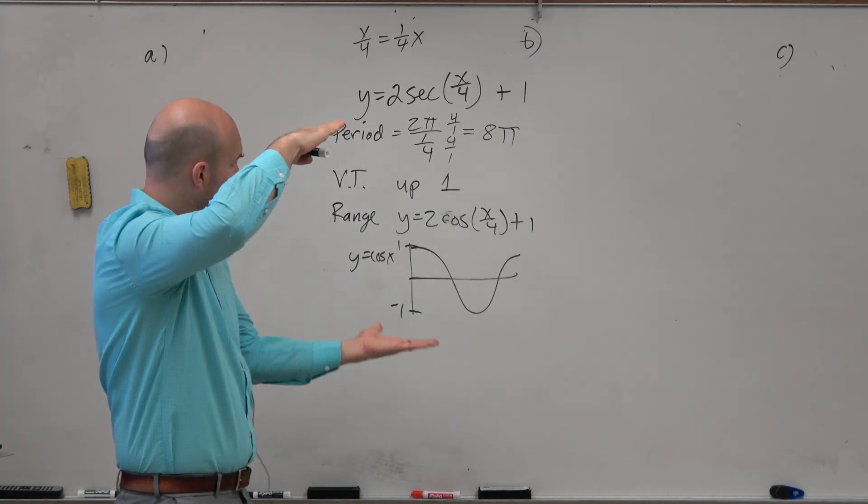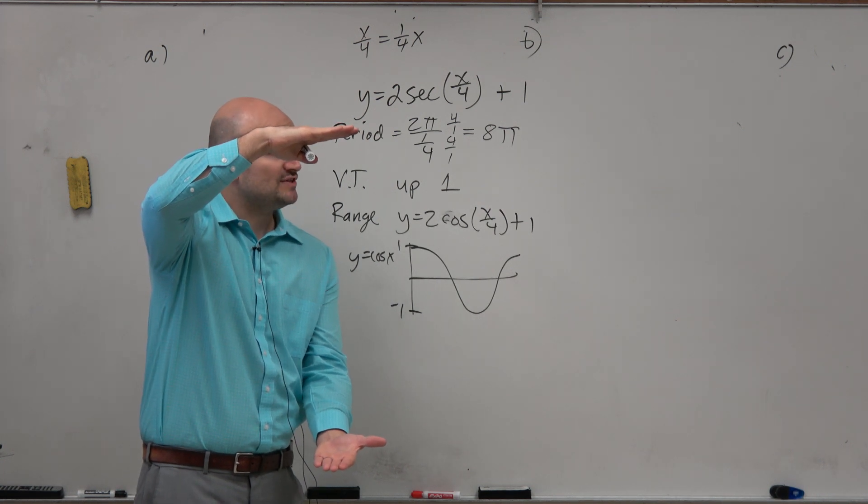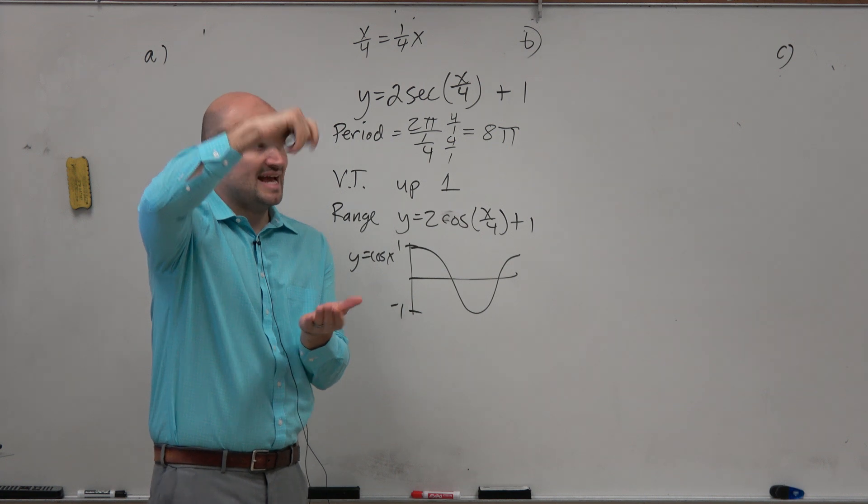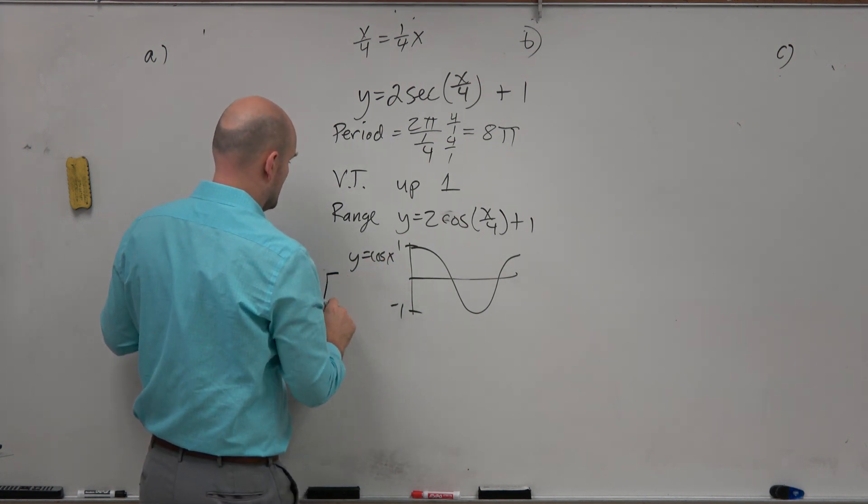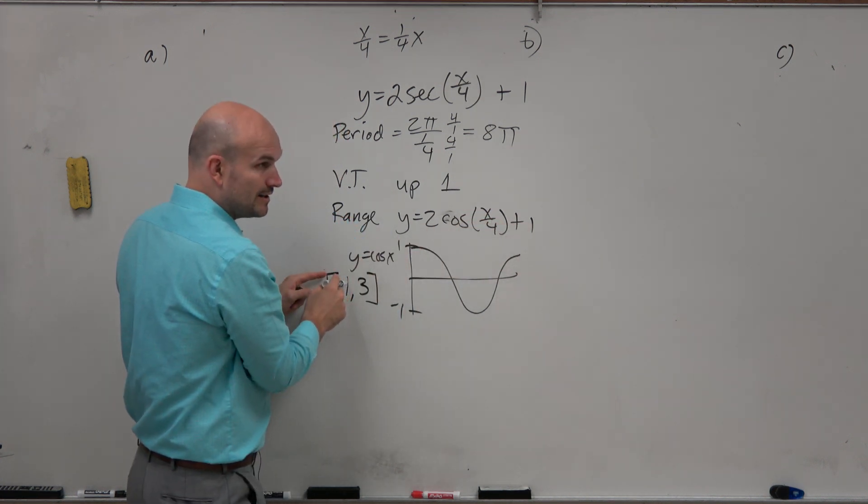That was from last class period. That's why last class period lesson was helpful to understand. So right now, the range is negative 1 to 1, multiplied by 2, negative 2 to positive 2. And then the graph got shifted up 1. So now the range is from negative 1 to 3, right? So the range of this graph with these transformations is from negative 1 to 3.